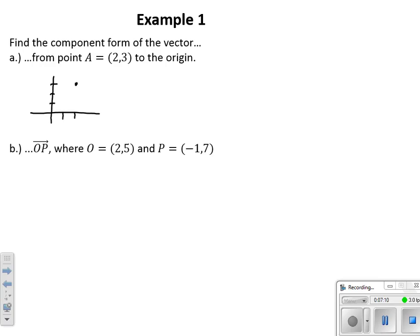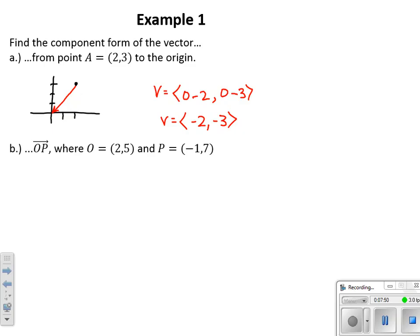Let's start with some basic examples of how vectors are represented. We've got point A starting at (2, 3) and the vector ending at the origin. Applying the head minus tail rule: head minus tail in x is 0 minus 2, and 0 minus 3 in y. So that vector is ⟨-2, -3⟩. It's the same as starting at the origin and going negative 2 horizontally, negative 3 vertically.